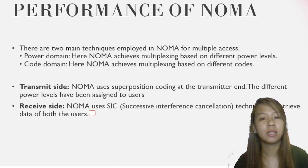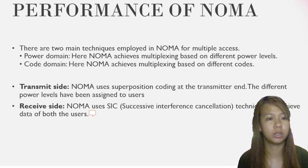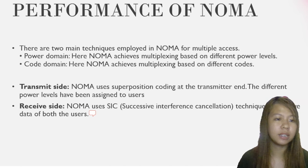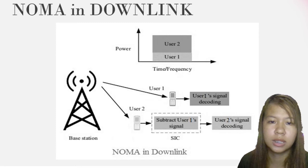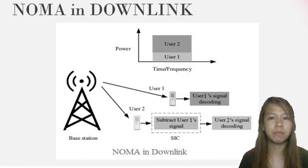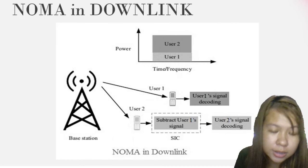At the receive site, NOMA uses SIC — Successive Interference Cancellation — to retrieve data of both users. At the receiver, user 2, the strong user, subtracts the signal of user 1 through SIC and then decodes its own signal. User 1, the weak user, treats the signal of user 2 as noise and decodes its own signal directly. As shown in the graph, the power of user 2 is higher than user 1, and the time-frequency resource is the same for both users.